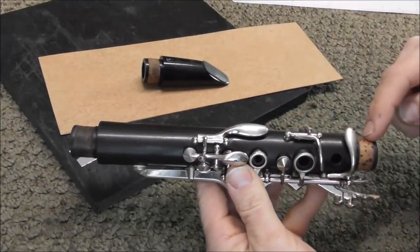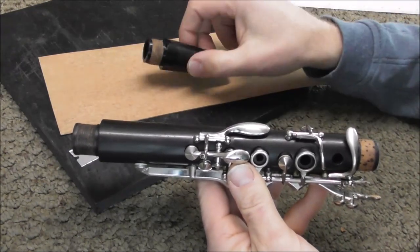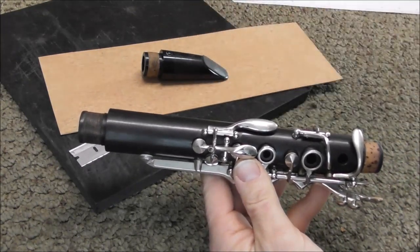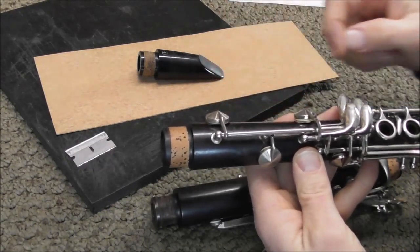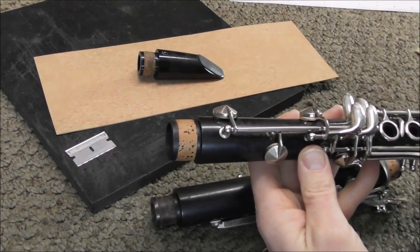The upper tenon, middle tenon and the mouthpiece corks are all about three inches or seven and a half millimeters long. And the lower joint that the bell attaches to is about three and a half inches or nine millimeters long.